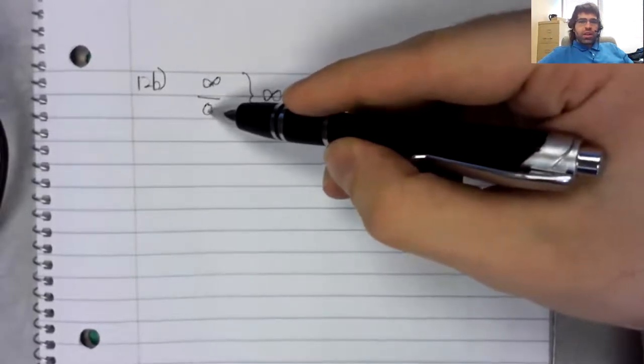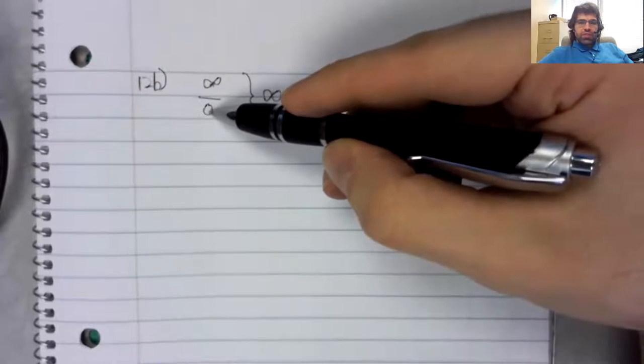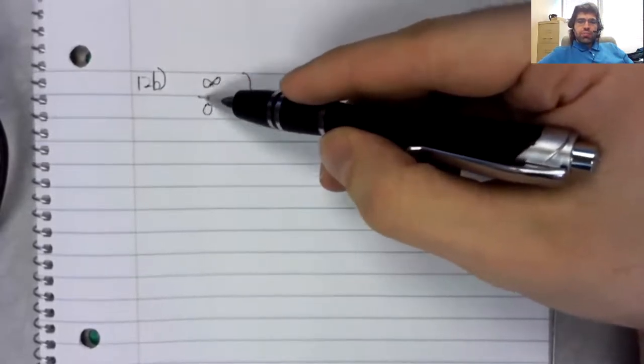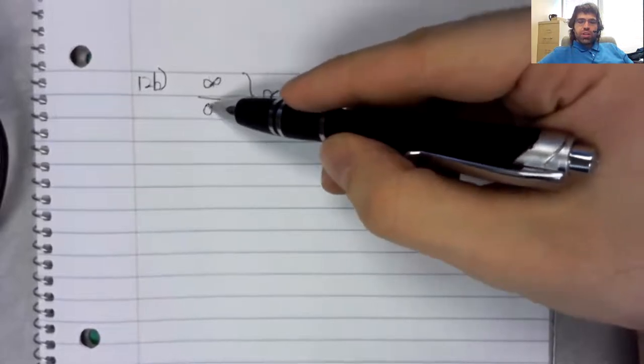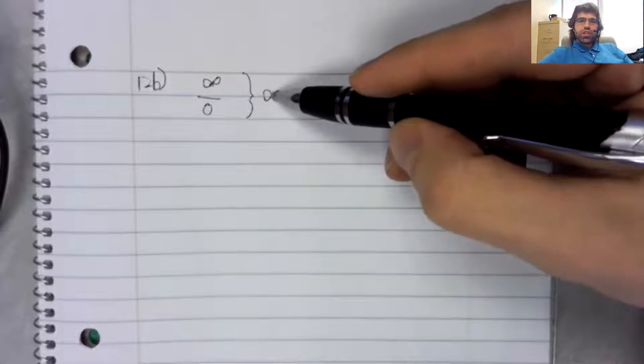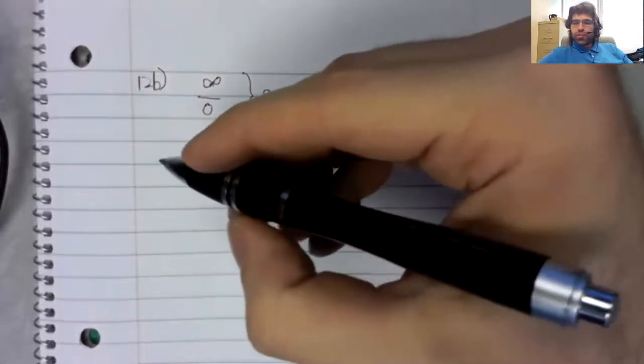The denominator getting small makes a fraction go to infinity. Put them together, both of these things are making the fraction go to infinity.